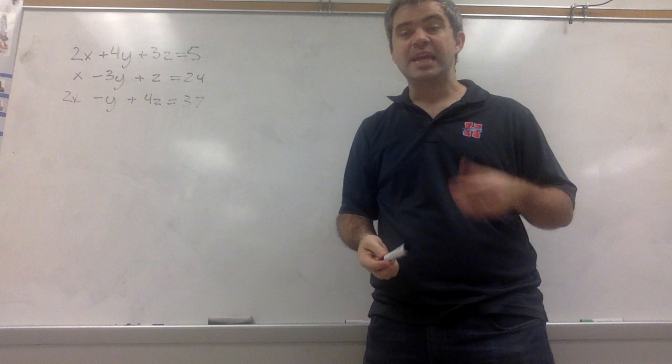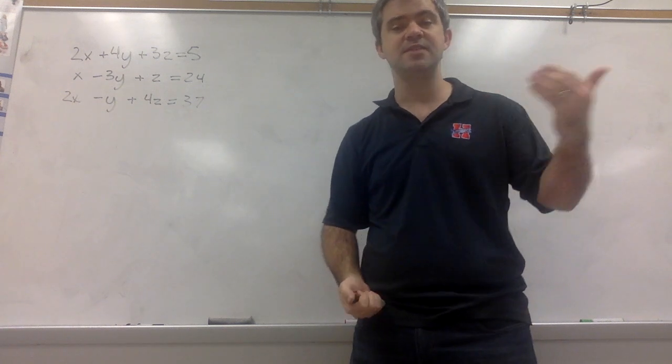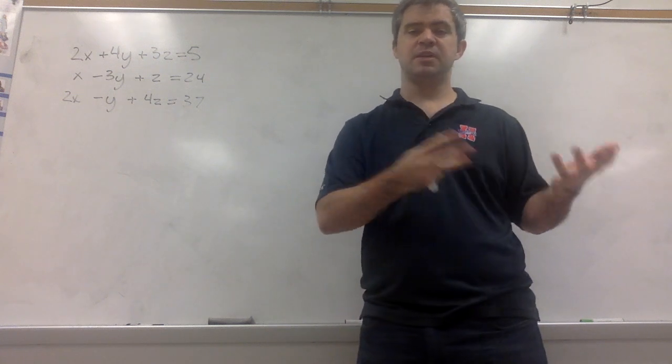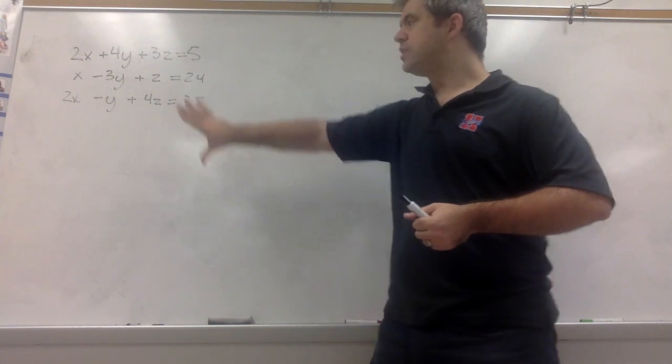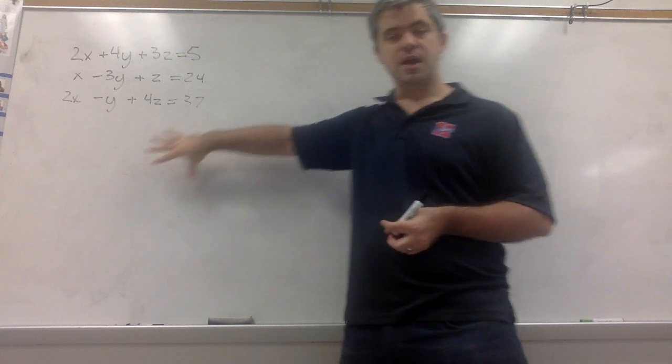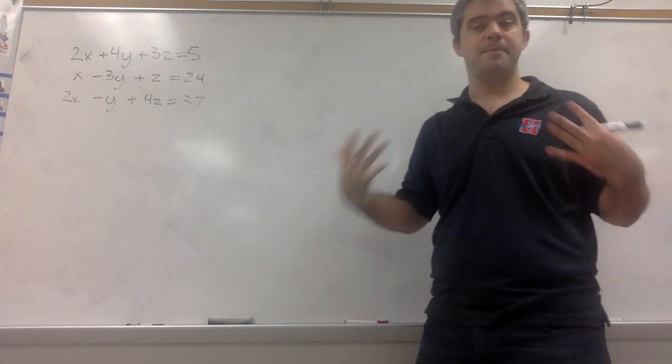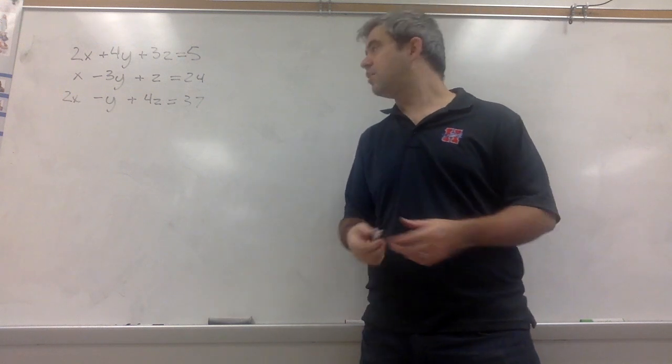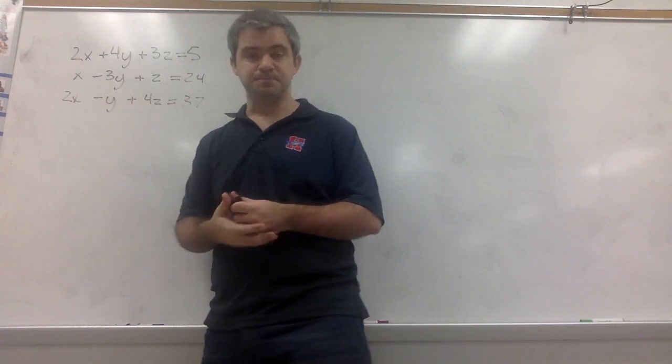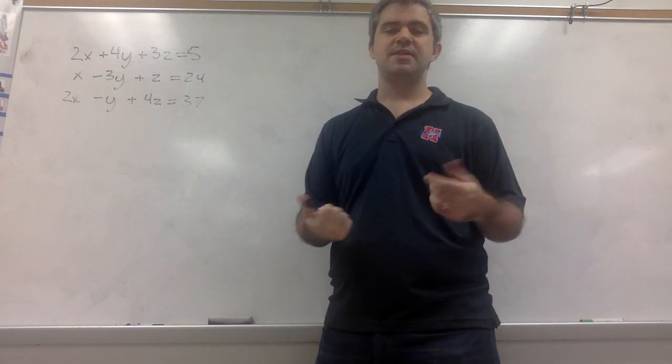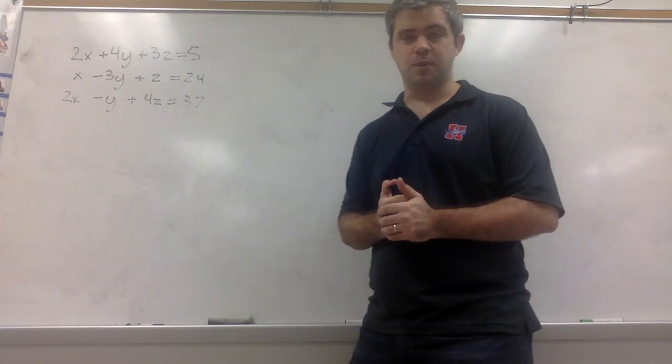And basically, Gaussian elimination is elimination. They're the same thing. The only difference between Gaussian elimination and elimination is we do all of the steps we would normally do with elimination, but we do them in the form of a matrix. And all that basically does is it gets rid of all of our variables. And especially when you've got a lot of different variables, that makes things a lot nicer to deal with.